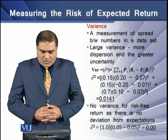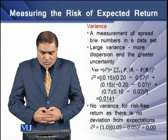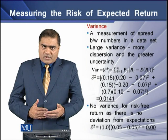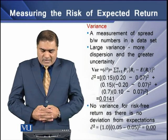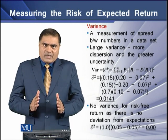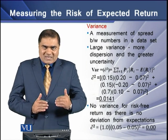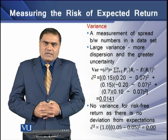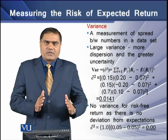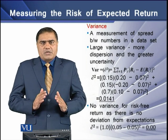To determine the variance, we square the probability value of the expected returns. For example, we have data whose variance is 0.0141. If we convert this figure into percentage, the variance in this particular case is 1.41 percent, or roughly closer to 1.5 percent. The variance is much lesser, so we can say that the riskiness of this particular investment is much lower and the investment is relatively safer.